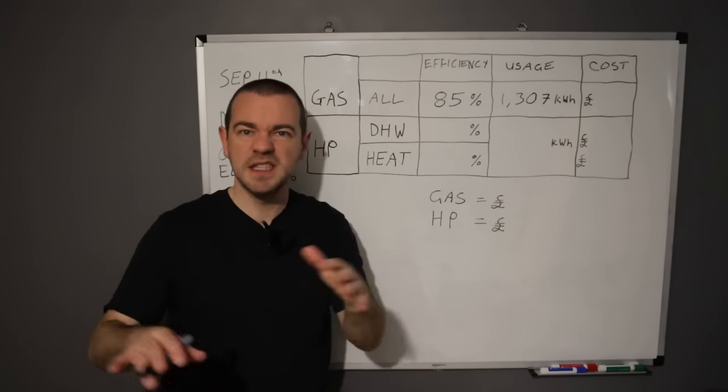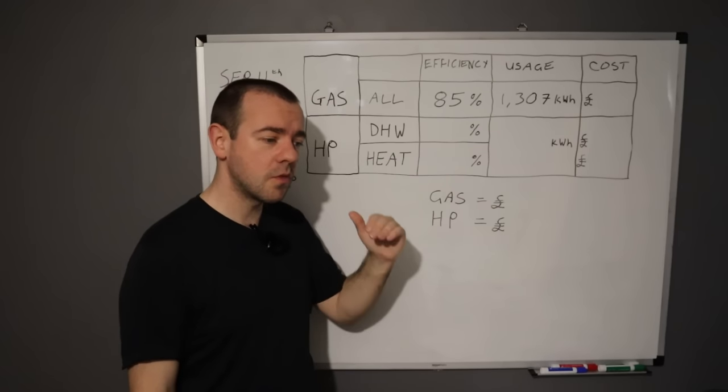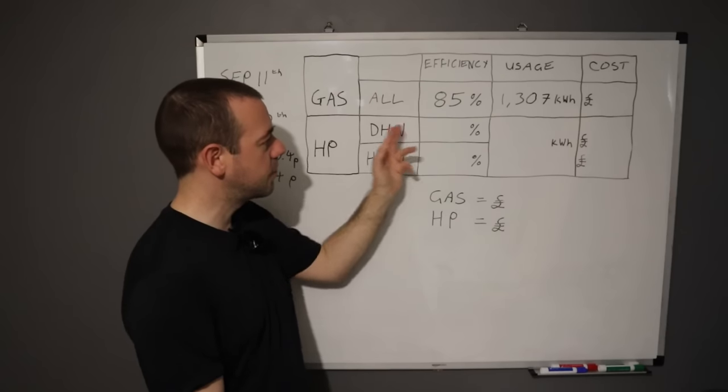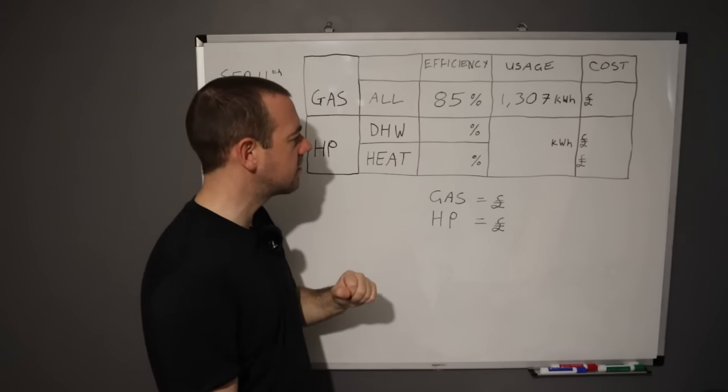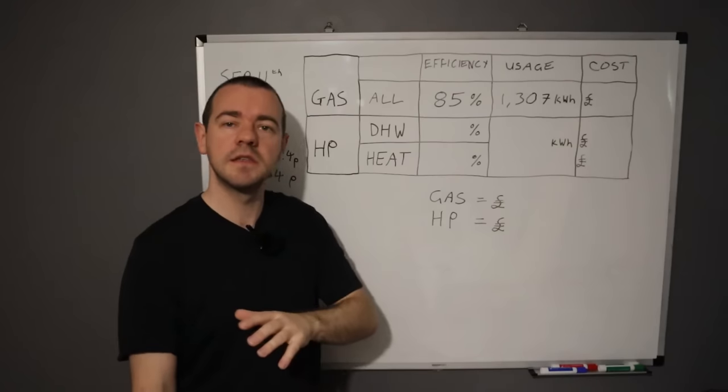DHW or domestic hot water, which to you and I is just hot water, and then the heating, the central heating system essentially. In terms of hot water which is now different for us, we've got a hot water cylinder that's heated up at night by the heat pump to 51 degrees centigrade.